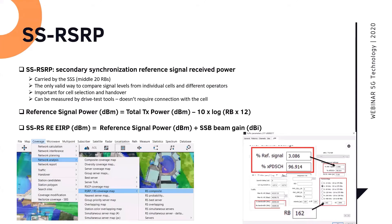And as you know, I mean, 5G can be 100 MHz bandwidth. So it's not really straightforward for the UE to scan the entire channel or the entire band. The base station or the UE have to only scan the middle of the band. So it's the only valid way to compare signals, signal levels from individual cells and different operators. So if you're going to do drive testing, you're going to do validation, you're going to do a comparison between different operators, you have to use the SSRSRP. This SSRSRP is very important for cell selection. It's to choose which site to camp into and for handover. So they estimate the next station coverage. So it can be measured by drive test tools and it doesn't require connection with the cell.